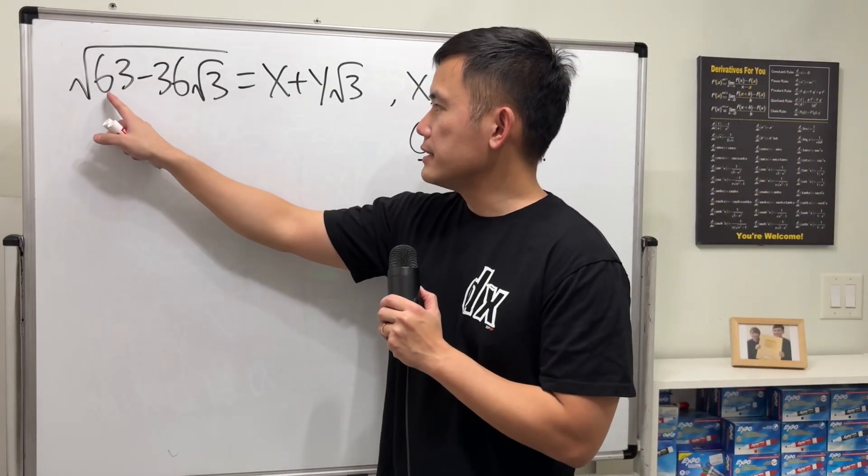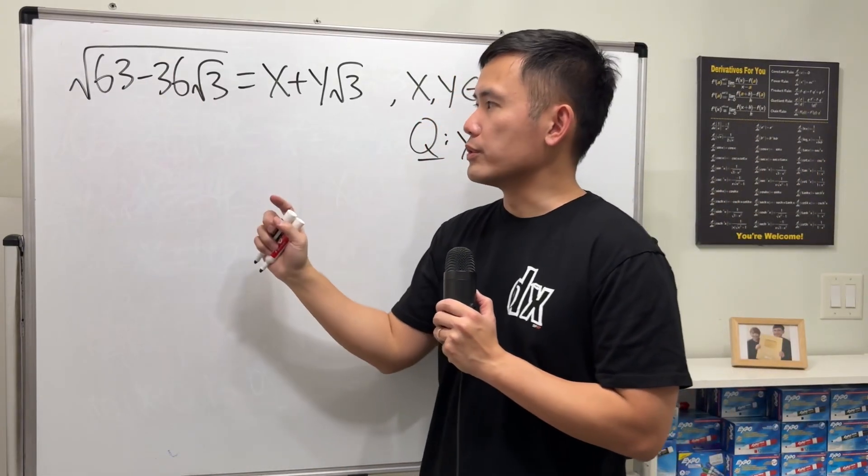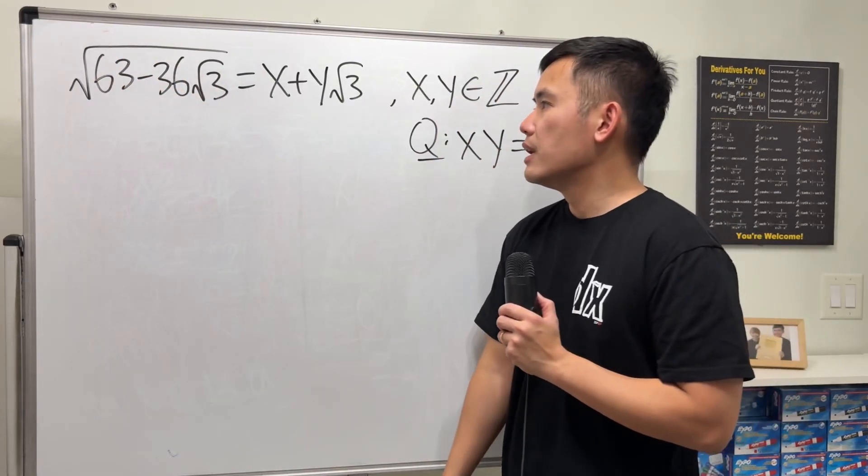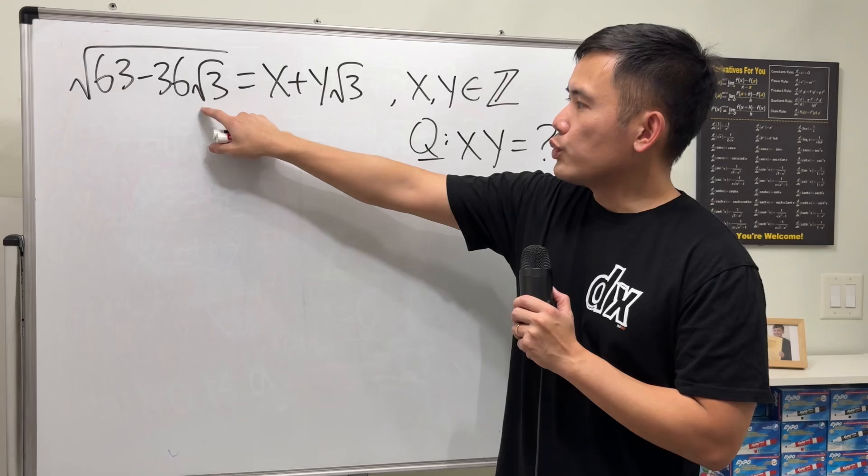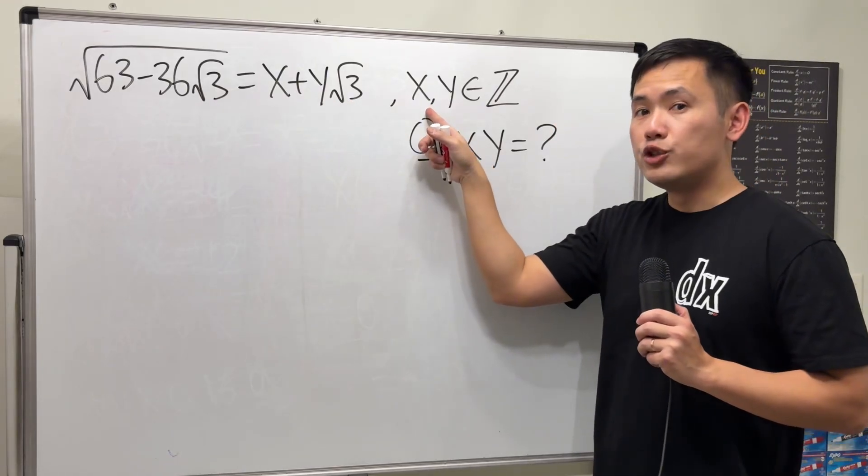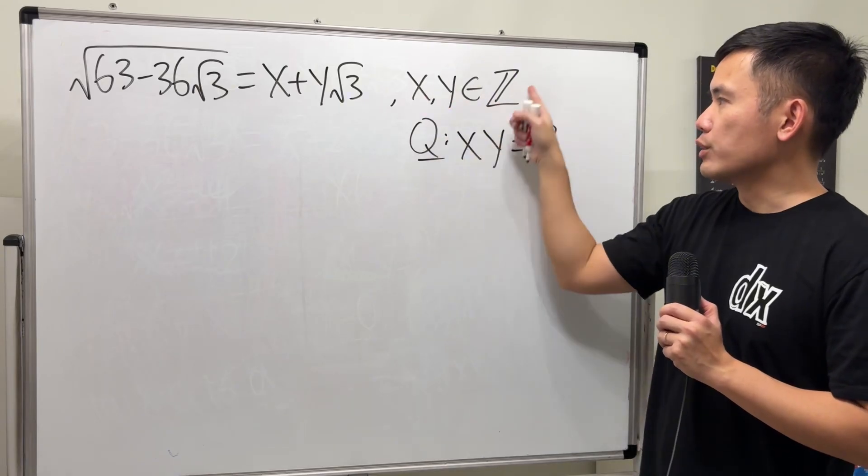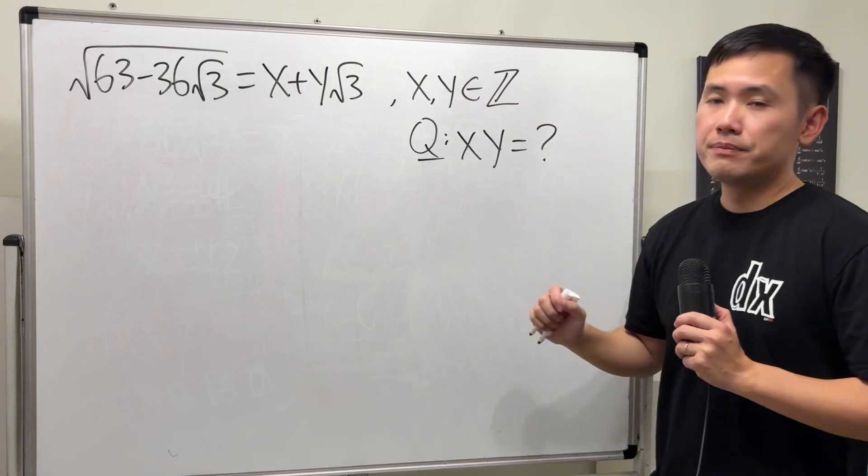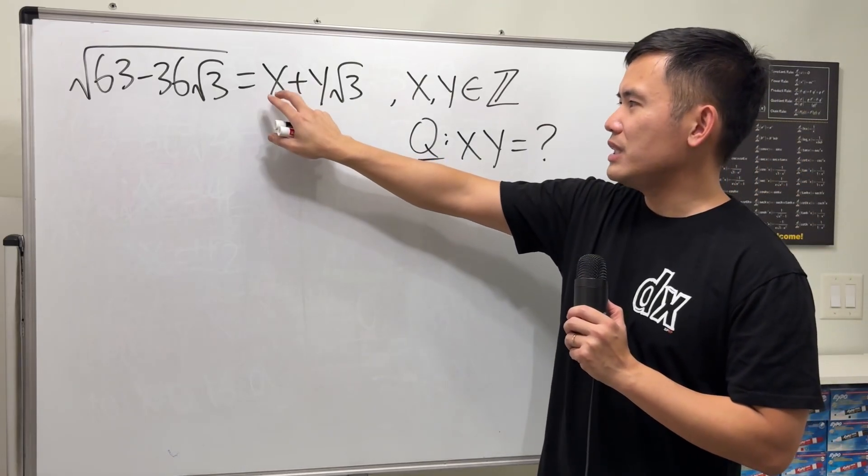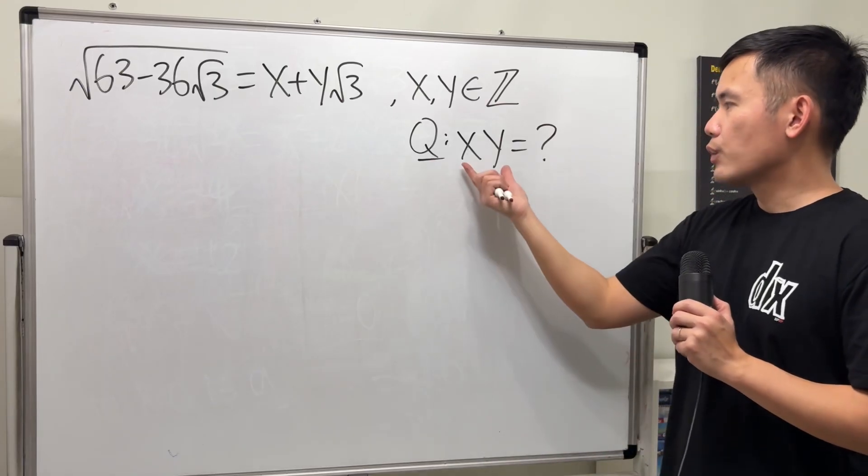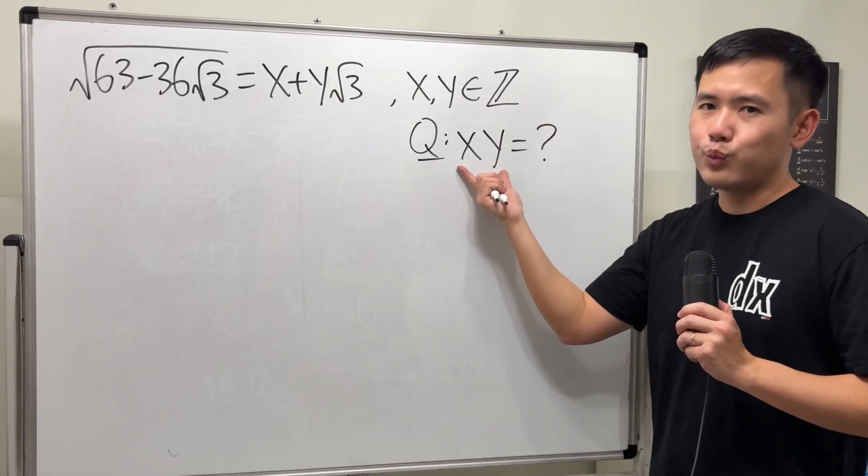Here we have square root of 63 minus 36 times square root of 3. This is an example of what we call the nested square root. We can write this in the form of x plus y times square root of 3 for some integers x and y. That's what this notation is for—x and y are integers, so no square root of 3 for the x or square root of 5 for the y. The question is what's the value for x times y?